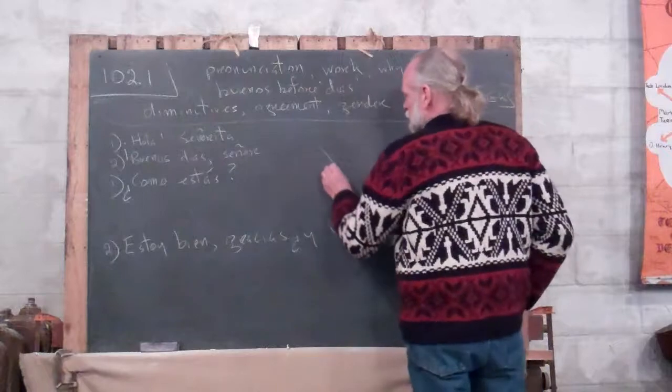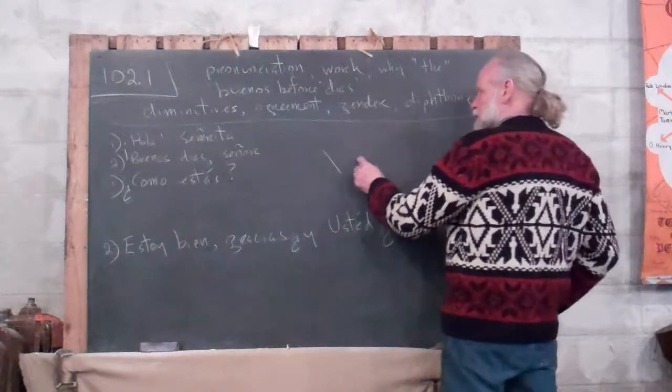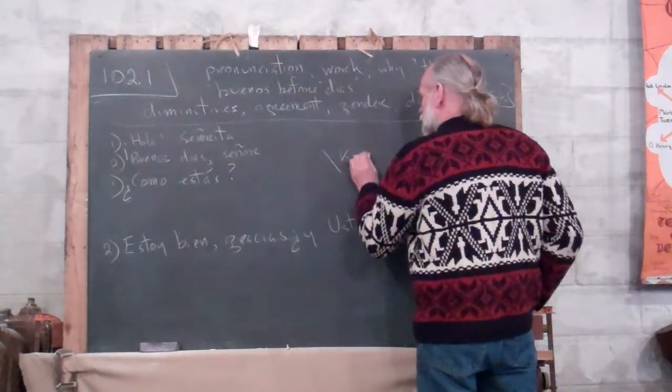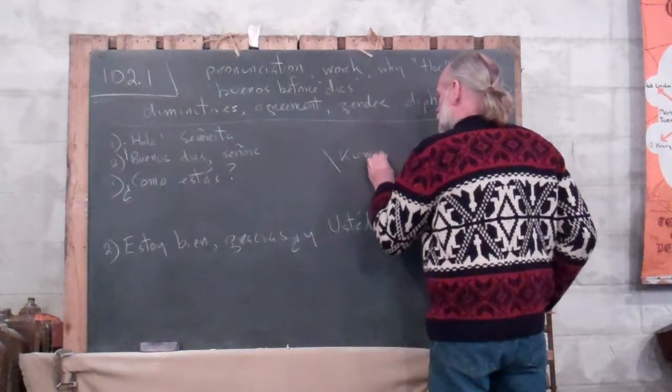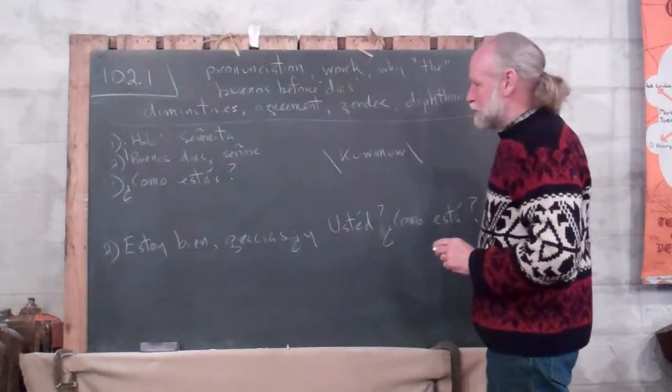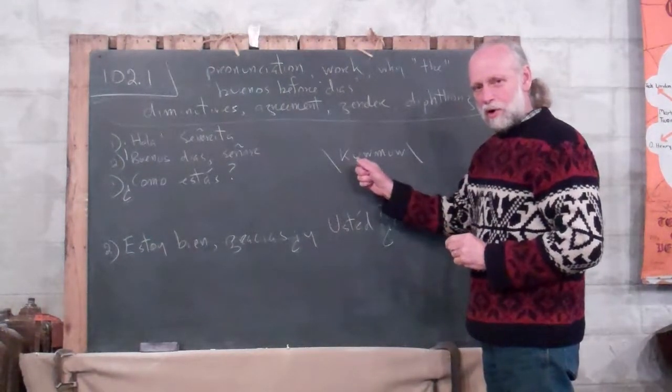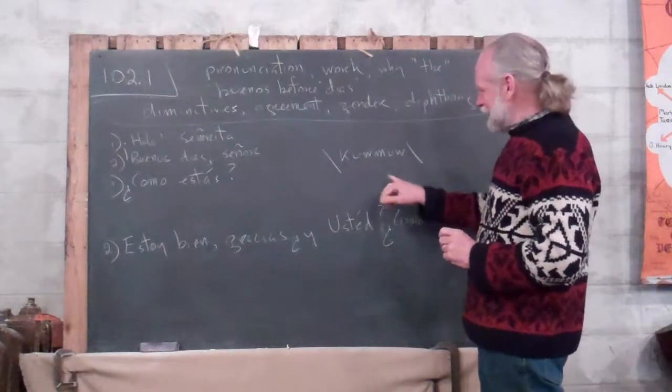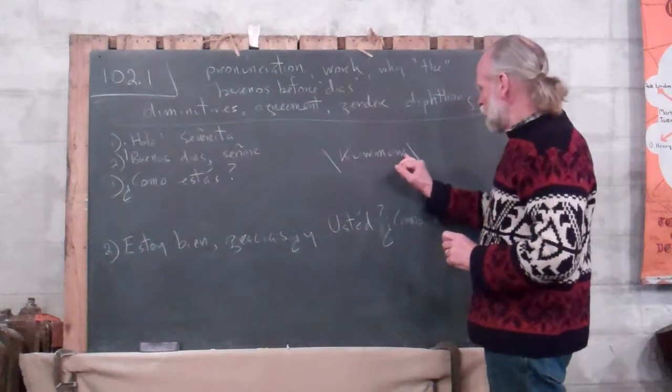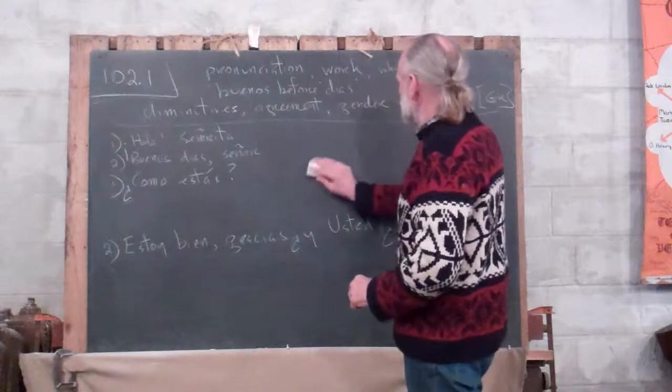Como estas? Now, let me deal with the pronunciation. A backslash means spelling for pronunciation. And, there is the way English speakers want to say that. Como, como. It's como. It's not como. They want to make a diphthong there. O-u. No, it's one sound. Como. Como estas?